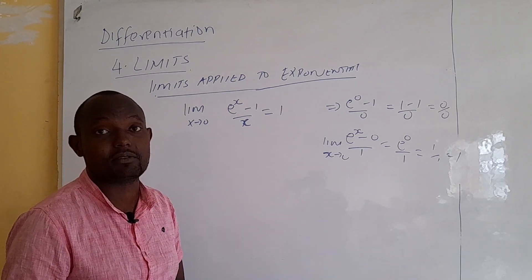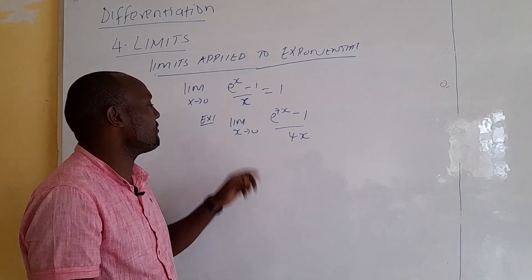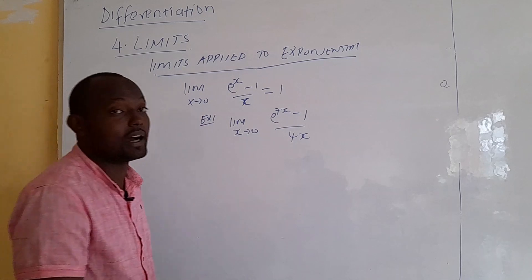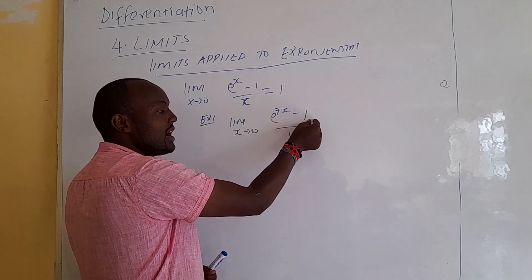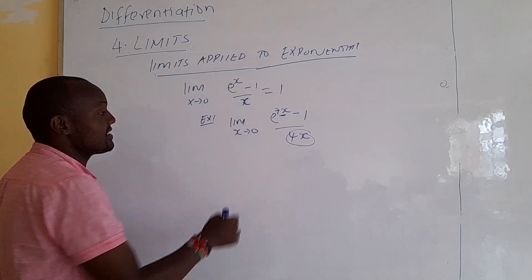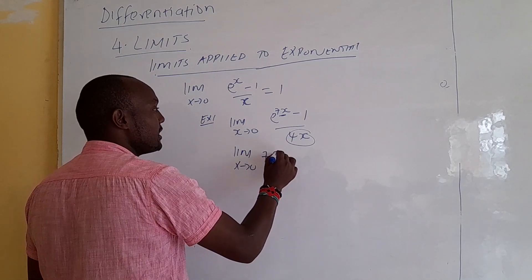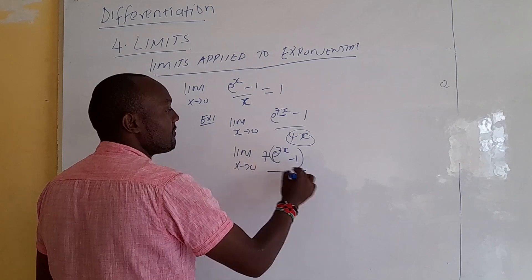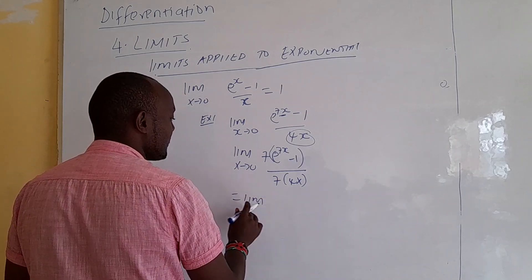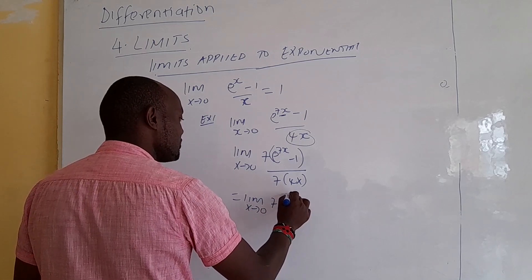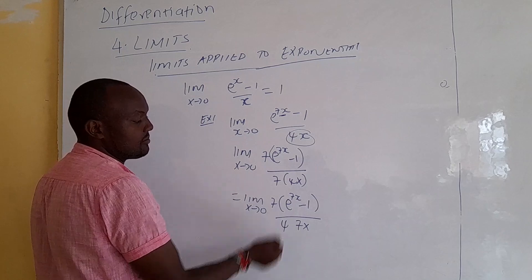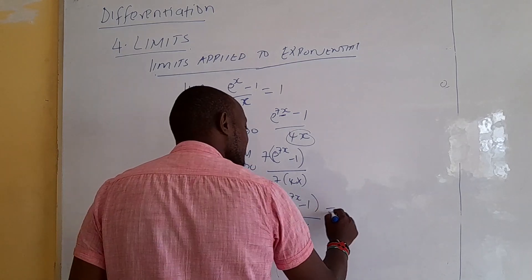Example 1: we have the limit as x approaches 0 of (e^(7x) - 1) / (4x). Just like the standard form (e^x - 1)/x, we must manipulate our expression so that we have the same pattern. We multiply both numerator and denominator by 7, giving us 7(e^(7x) - 1) all over 7 times 4x, which equals 7/4 times (e^(7x) - 1)/(7x).